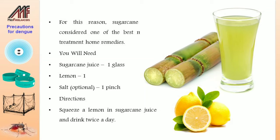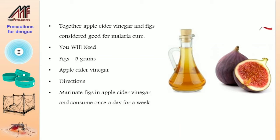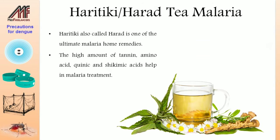Squeeze lemon into sugarcane juice and drink twice a day to cure malaria. Apple cider vinegar is an acid that helps eliminate fever and lower body temperature. Figs contain a high amount of alkaline which helps regulate the pH level in the body. Marinate figs in apple cider vinegar and consume once a day for a week.